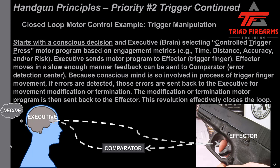Now we move to a closed loop motor control example with trigger manipulation. It starts with a conscious decision, the executive brain selecting a controlled trigger press, or CTP, motor program based on engagement metrics — for example, time constraints, distance, accuracy requirements, and risk of the shot. The executive then sends a motor program to the effector, the trigger finger, which moves slowly enough so that feedback can be sent to a comparator — an error detection center. If errors are detected, they are sent back to the executive for movement modification or termination, which closes the loop — hence the name closed loop.